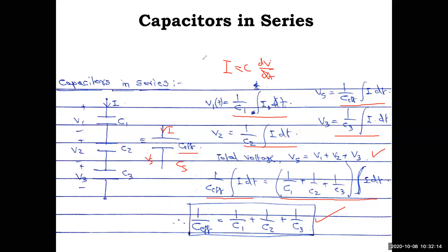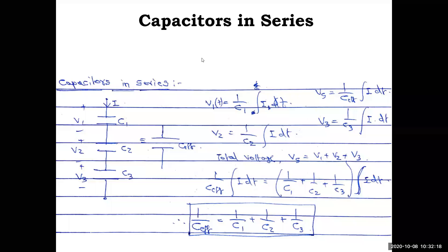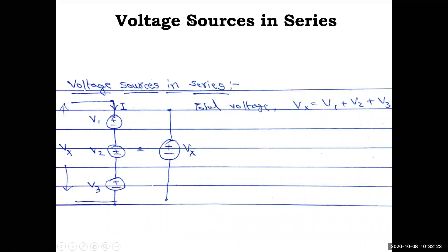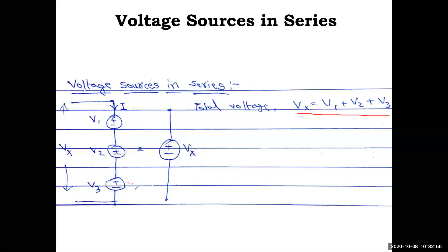For voltage sources in series, it is straightforward: three voltage sources V1, V2, V3 connected in series give an equivalent voltage Vx = V1 + V2 + V3. For example, 1V + 2V + 3V in series equals a single 6V source. However, notation is important — if one source has reversed polarity (minus-plus), subtraction applies, e.g., Vx = V1 + V2 − V3.